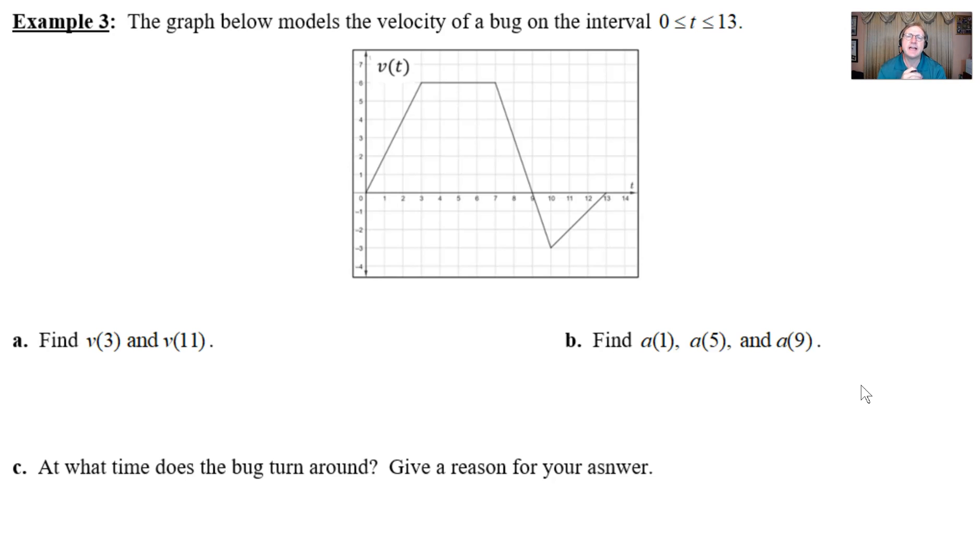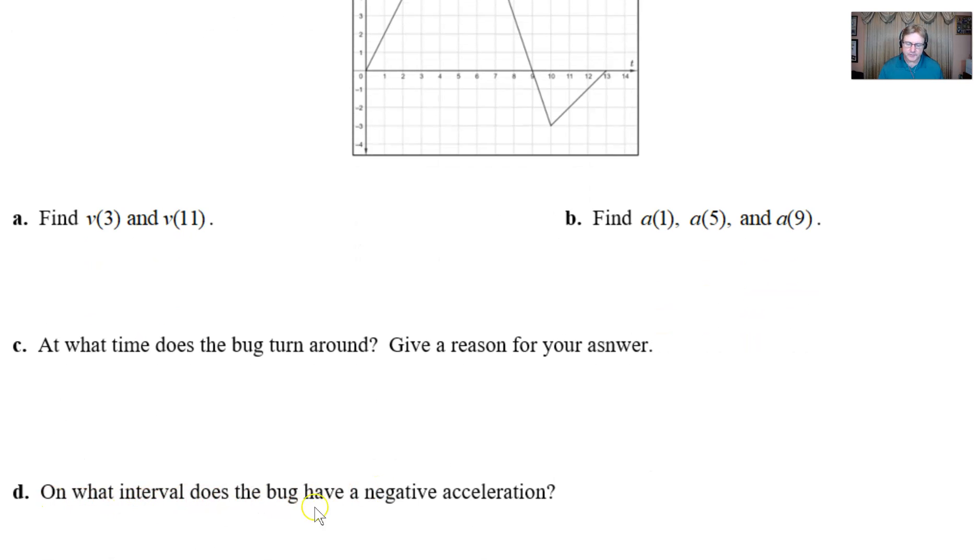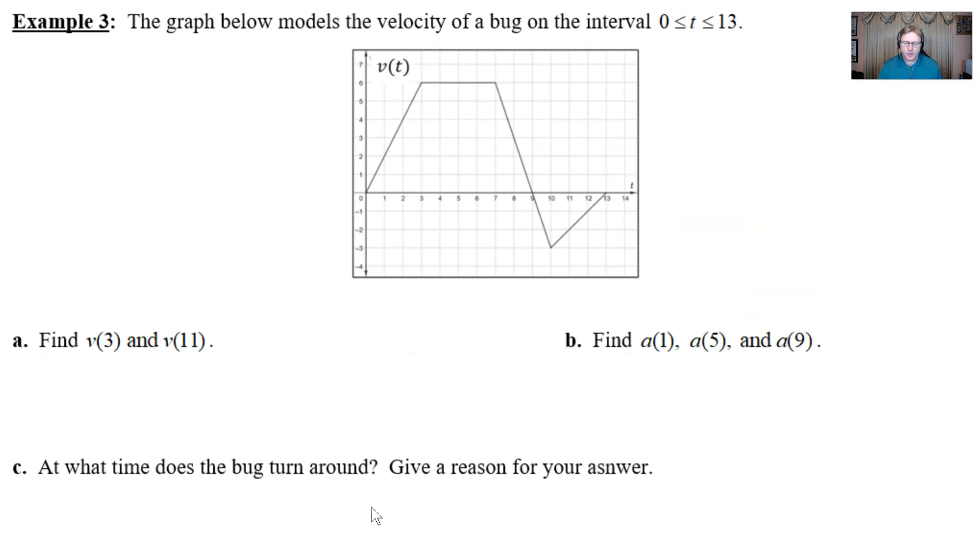This is example three in the notes I provide for my students. This is a wonderful problem written by my good friend Brian Passwater. The graph below models the velocity of a bug on the interval time 0 to 13, and we're asked several questions based on this particular graph. We have four different parts.